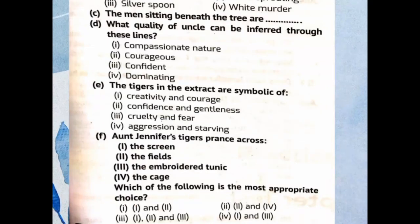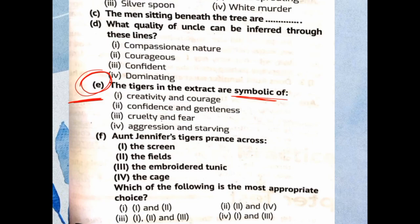Part E: The tigers in the extract are symbolic of — creativity and courage, confidence and gentleness, cruelty and gentleness, cruelty and fear, or aggression and starving? The tigers symbolize creativity and courage. Option one is correct, as they represent Aunt Jennifer's desire for freedom, bravery, and strength.